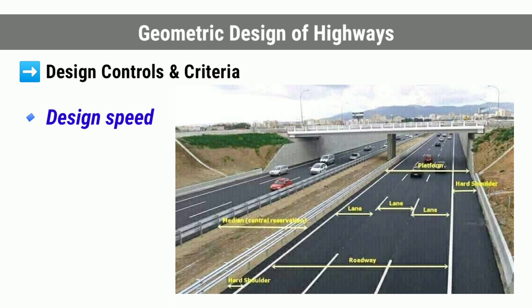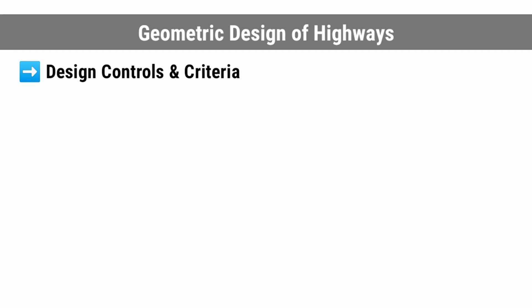Also, the horizontal elements such as radius of curve, super elevation, transition curve length, and vertical alignment elements such as gradient, length of summit and valley curves, depend mainly on the design speed of the road.